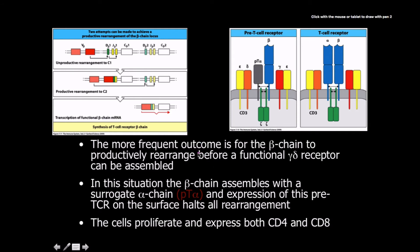The more frequent outcome is for the beta chain to be produced before a functional gamma-delta because it's faster. In this situation the beta chain assembles with a surrogate chain known as PTA, pre-T cell receptor. Expression of this pre-T cell receptor on the surface halts all rearrangement. This is analogous to the surrogate light chain we had for B cell development. We're testing to see if the beta chain, which is homologous to the heavy chain in immunoglobulins, will be able to bind with a light chain, an alpha chain in this context. If it does, it will halt all rearrangement of the gamma-delta and proliferate into expressing both CD4 and CD8.